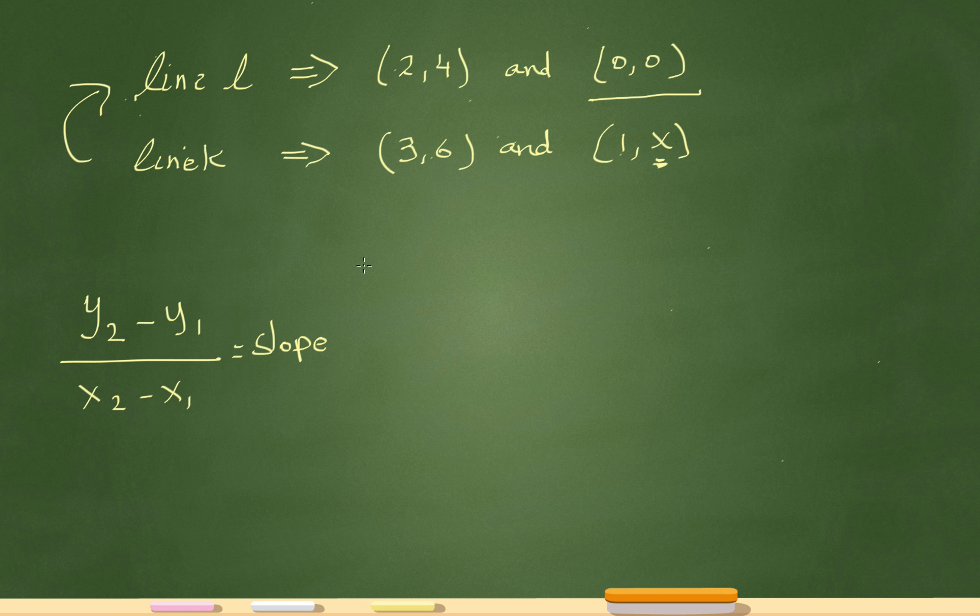Now, a couple of things to understand here is the relationship between two lines that are perpendicular. Two lines that are perpendicular have slopes that are opposite reciprocals. For example, if the slope of line L is 1/2, that would imply the slope of line K is -2. The reason for that is you flip it and change the sign, or in other words, the opposite reciprocal or negative reciprocal.